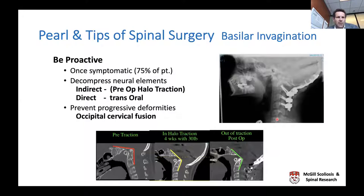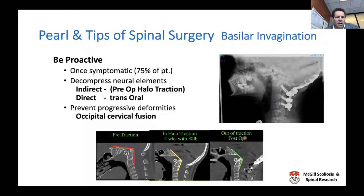For basal invagination, one needs to be proactive. Three quarters of patients who develop it will become symptomatic over time, so as soon as you document progression, don't wait for symptoms—treat proactively. Decompression of the brainstem can be achieved indirectly through traction preoperatively, pulling the skull away from the odontoid, or directly via a transoral approach to decompress the basilar invagination, followed by posterior spinal fusion.